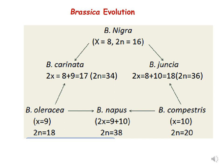In today's lecture we will be discussing the origin and evolution of some more crop species. The first example is the evolution of Brassica. There are many species of Brassica, and these species have evolved because of hybridization followed by chromosome doubling of many parental species.